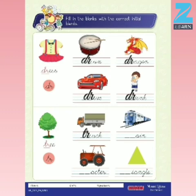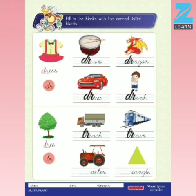Now tell me what image is this? Yes, that is a train. And the initial blend in the word train is TR. T-R-A-I-N. Train.